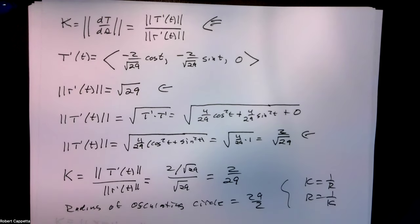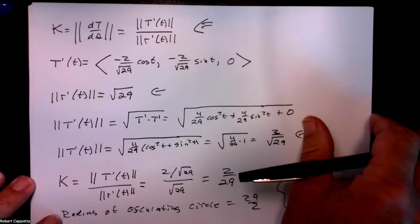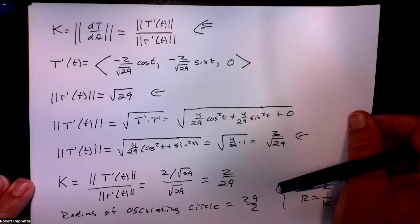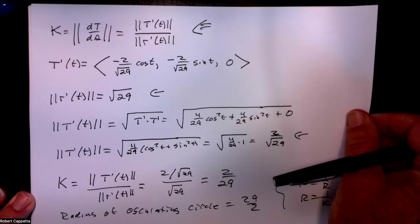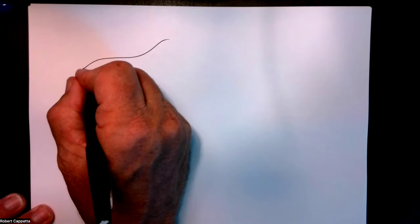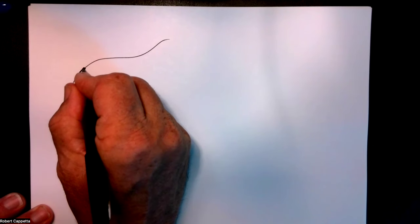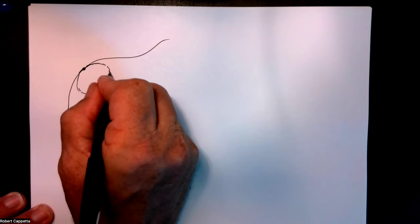What do we mean by osculating circle? If I have some kind of a curve and I pick a point on it, the osculating circle is the circle in the same plane that kisses it in exactly one point. This curve has constant curvature, which is interesting. Thank you — we'll see you next time.